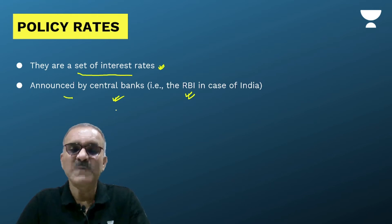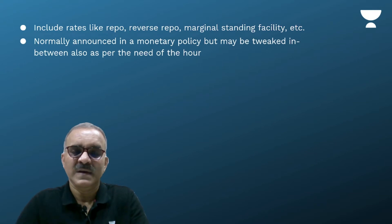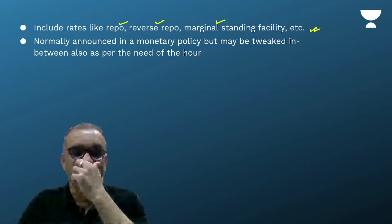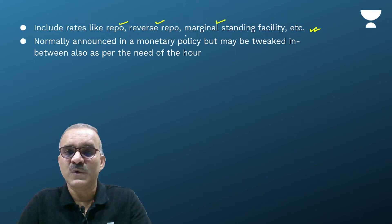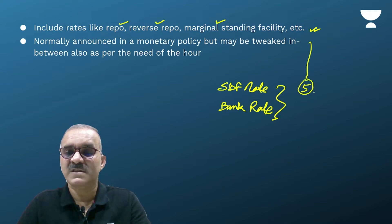In other countries, the exact set may differ, but across the world these are responsibilities of the central banking body. In India, it includes rates like the repo rate, reverse repo rate, marginal standing facility rate, standing deposit facility rate, and bank rate — precisely five such interest rates which are together called policy rates.